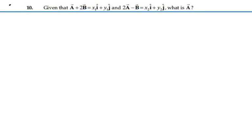Here's problem 310. Given that a plus 2b equals x1i plus y1j, and 2a minus b equals x2i plus y2j, what is vector a? So if we write these as vectors,